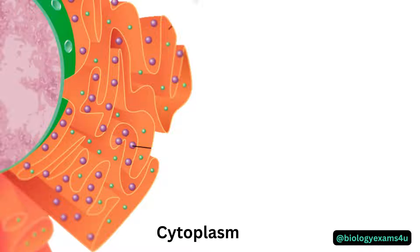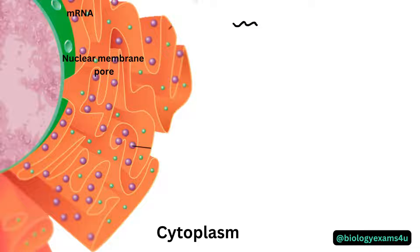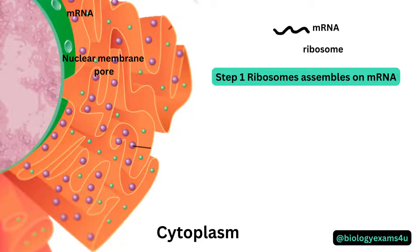Step one: mRNA comes out of the nuclear pore into the cytosol. Then ribosomes assemble on the mRNA — the larger subunit and smaller subunit of the ribosome bind to the mRNA.